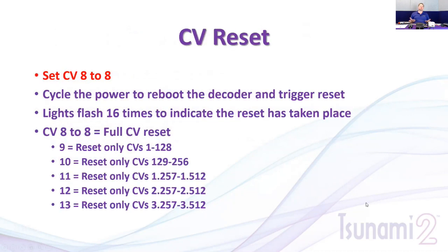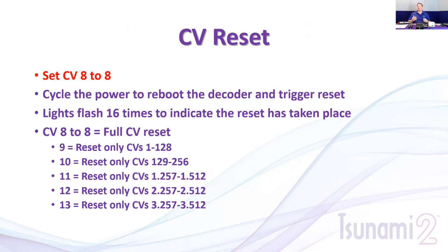The last thing to cover is a CV reset. Set CV 8 to a value of 8 and cycle the power — the decoder reboots and resets. With the Tsunami 2 and Econami having so many CVs, you can also do partial resets: CV 8 = 9 resets only CVs 1 through 128; CV 8 = 10 resets CVs 129 through 256. If you've messed up the function mapping and want to start over, set CV 8 to 11, tip the locomotive off the track and back on. Once it restores, the lights flash, and only those function mapping CVs have been reset — not the entire decoder.